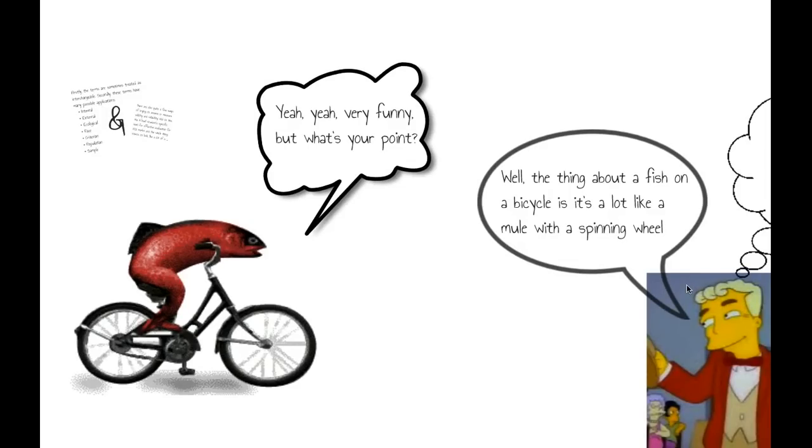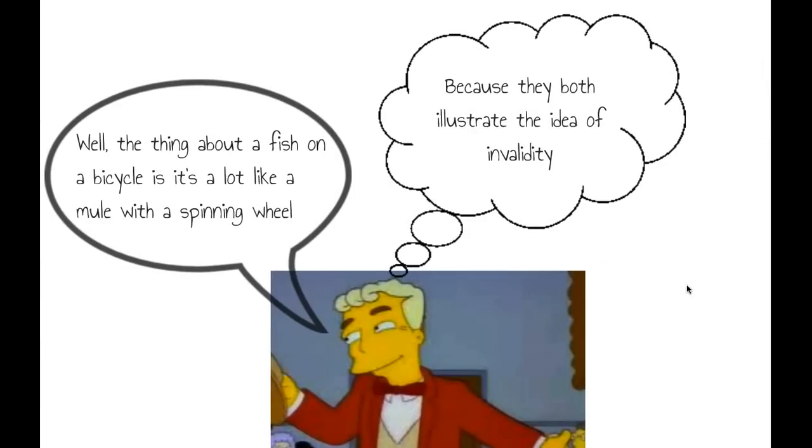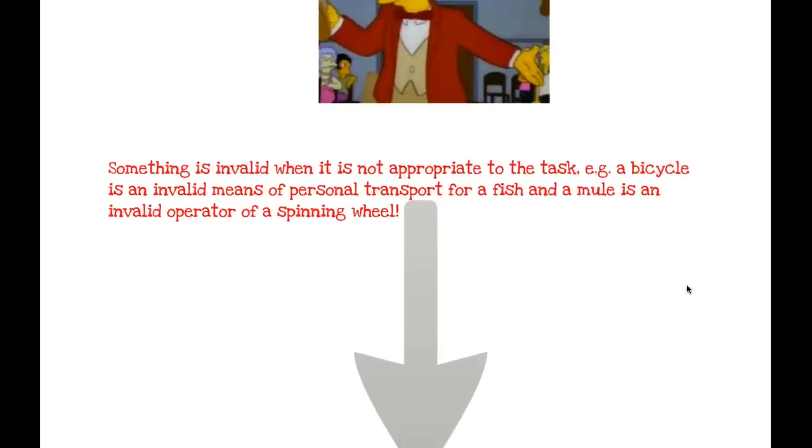And the point is, a fish on a bicycle is a lot like a mule with a spinning wheel, and that's because they both illustrate the idea of invalidity. We say something is invalid when it's not appropriate to the task.